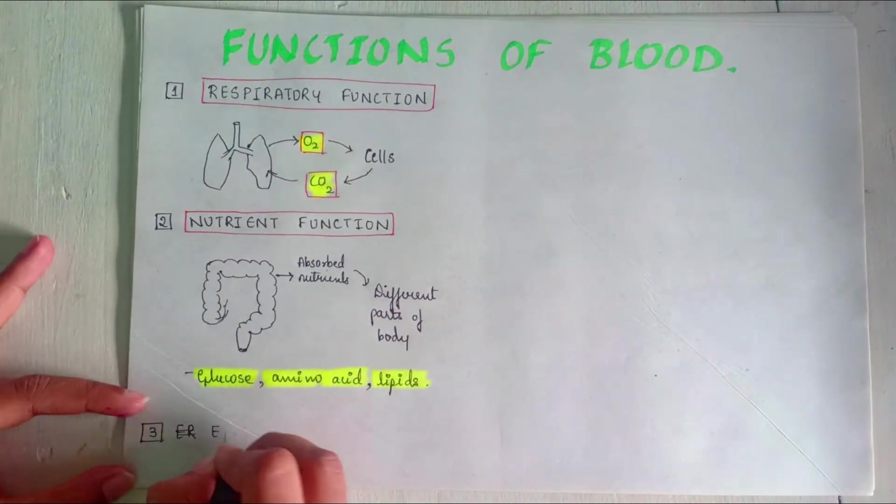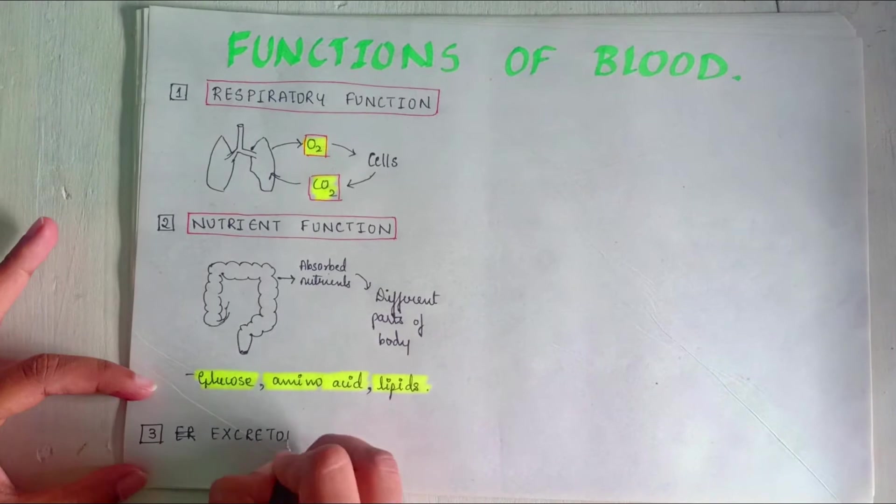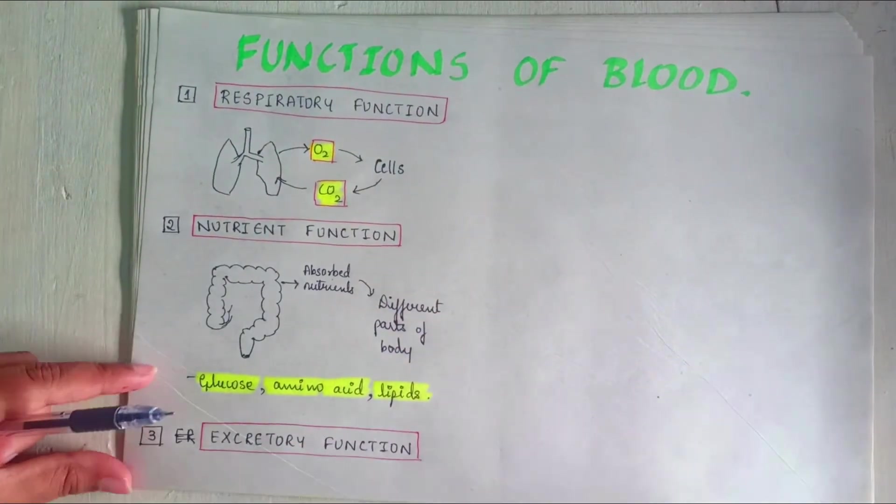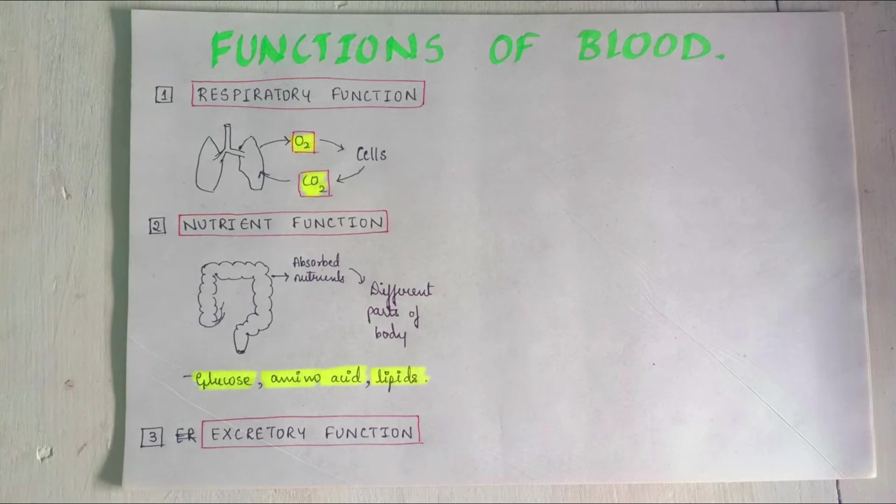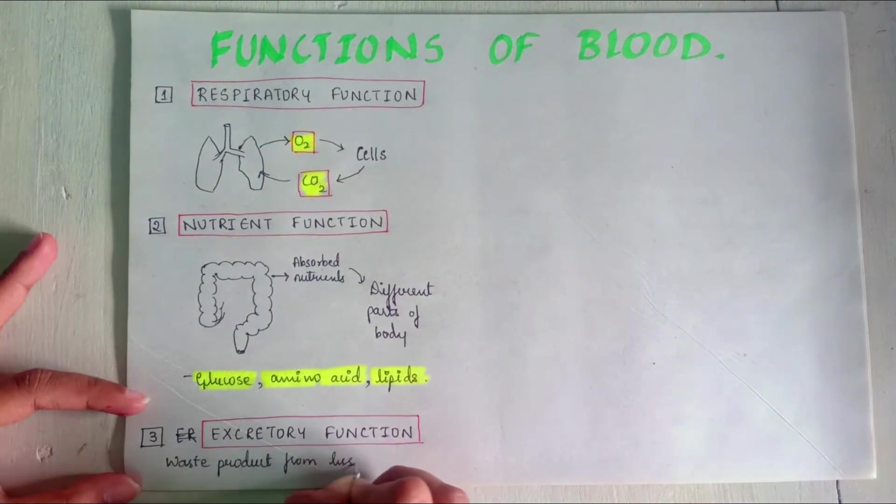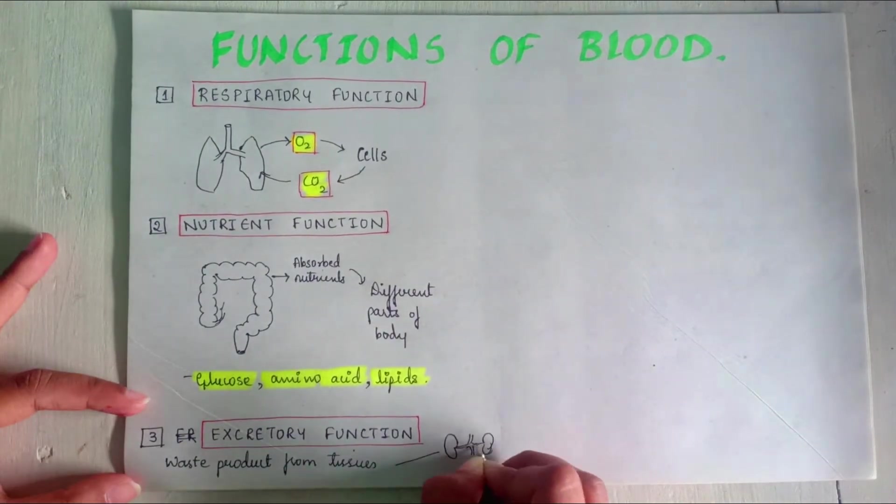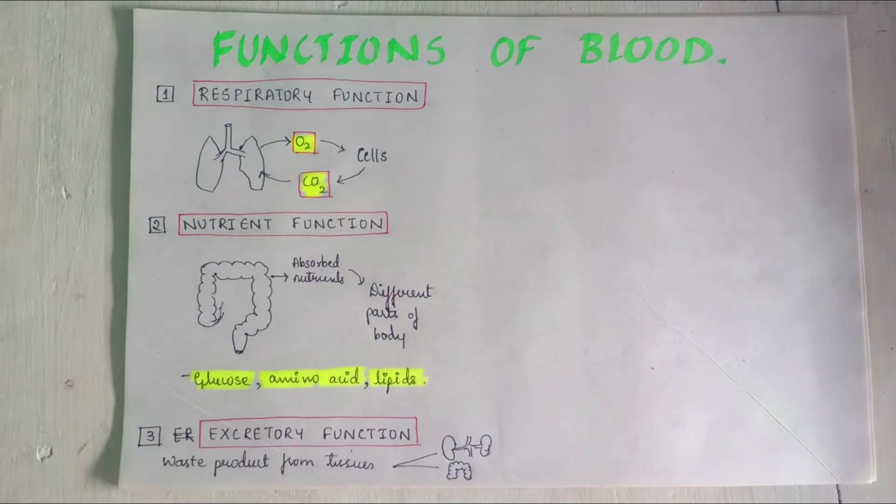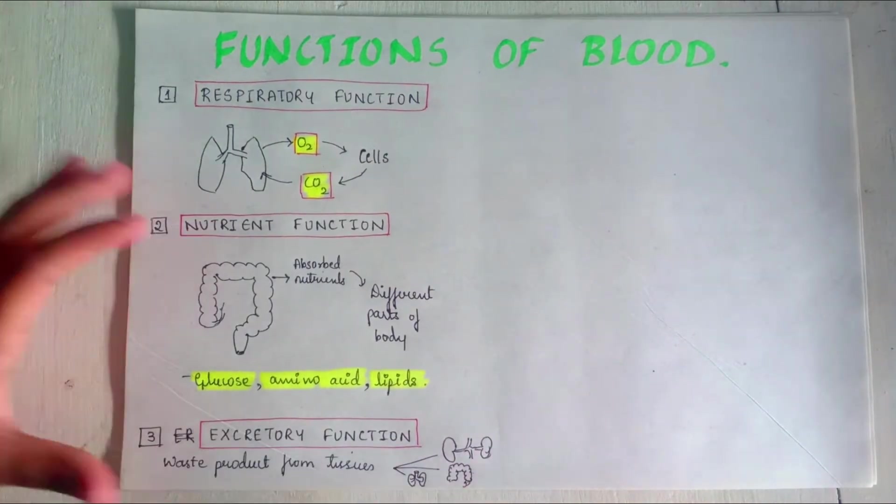Third function: The excretory function. Waste products formed in the tissues during various metabolic activities are removed by blood and carried to excretory organs such as kidneys, digestive system, intestines and the lungs.